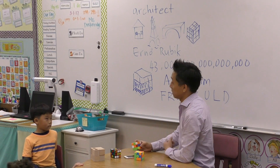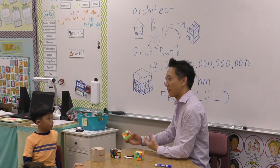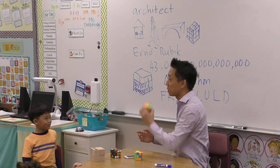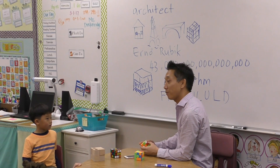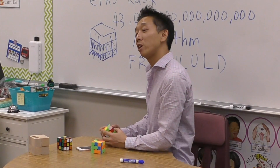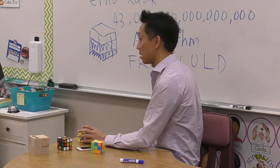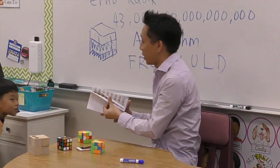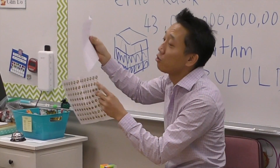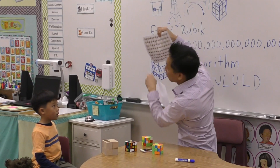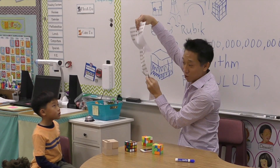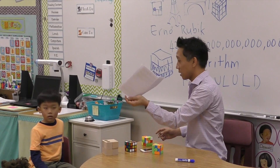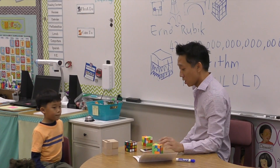If you learn about seven or eight algorithms and know when to use them, you'll also be able to solve the Rubik's Cube. When Chandler did this for the first time about four or five months ago, it took him 18 minutes. In 18 minutes he was able to solve the Rubik's Cube because he had memorized about seven or eight algorithms. But then Chandler wanted to become faster, and there are hundreds of different algorithms you can memorize.